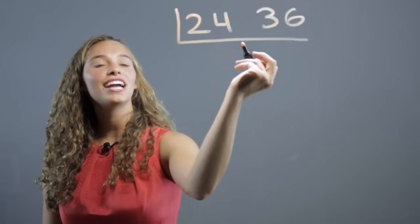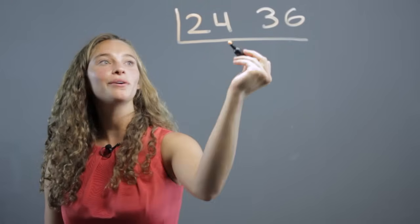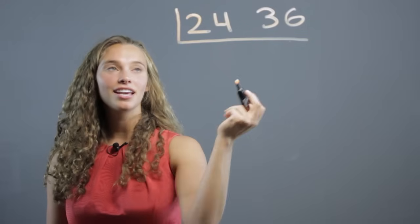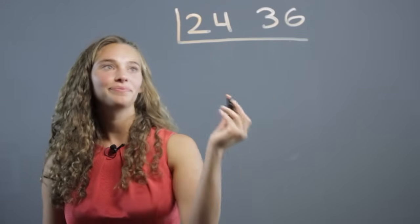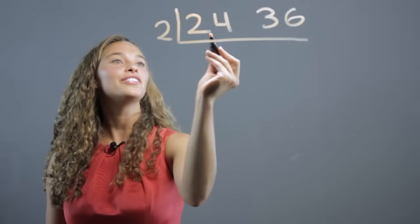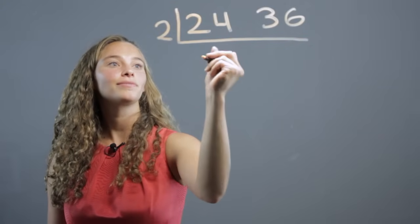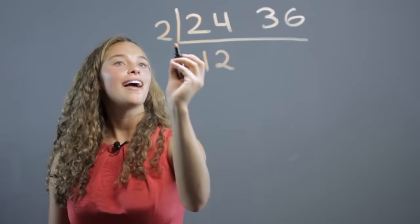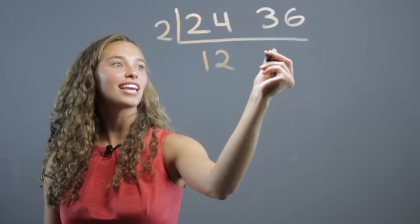Now we're going to find the smallest prime number that goes into these two numbers. In this case, it's 2, the smallest prime number. So we have 2 into 24 is 12 and we have 2 into 36 is 18.